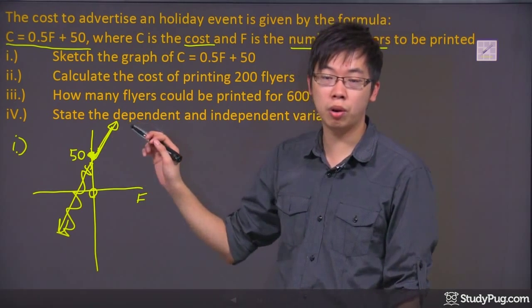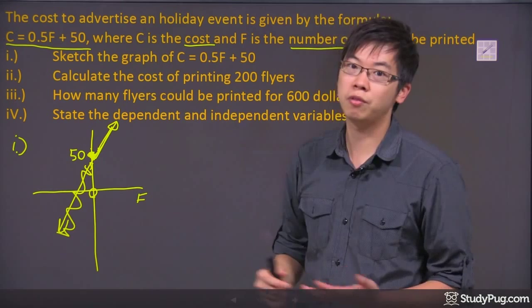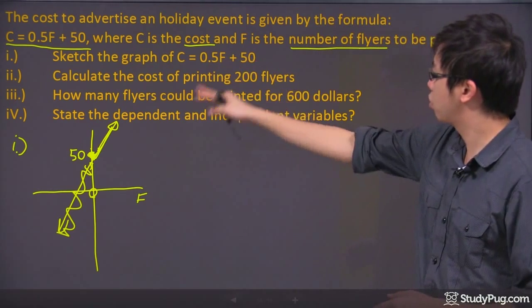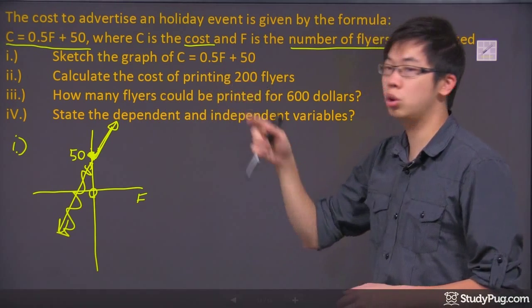And for every flyer that you print, you're going to pay 0.5 cents. So there's your graph right there approximately. Now, calculate the cost of printing 200 flyers.